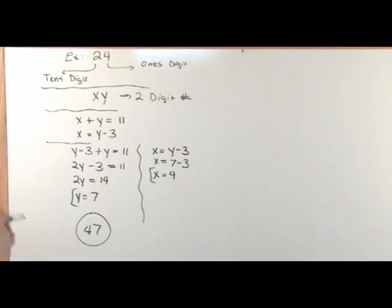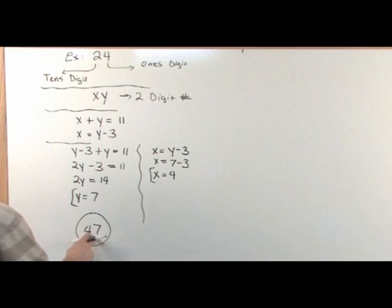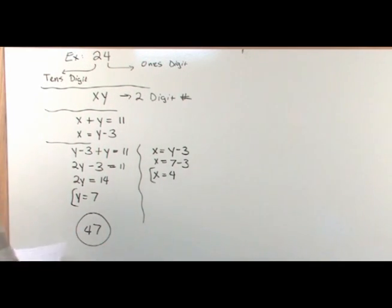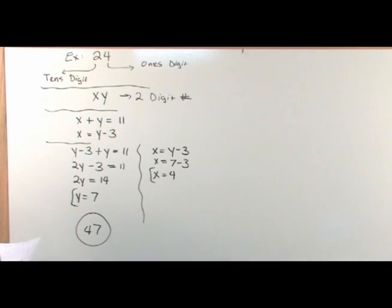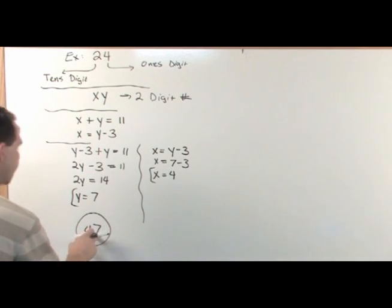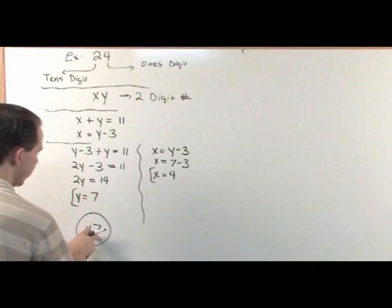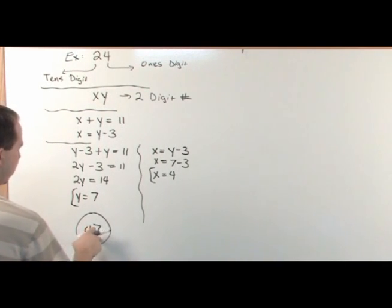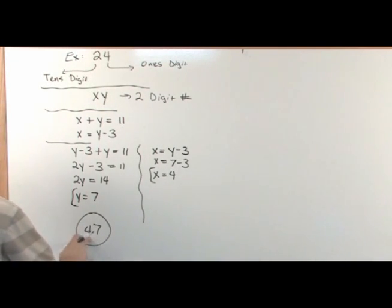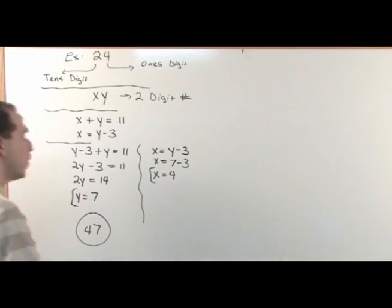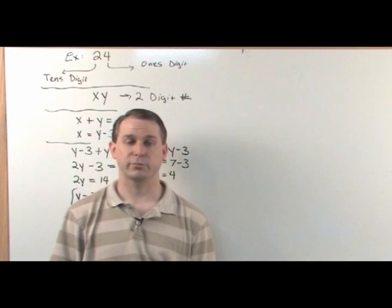Let's check if this is right. The sum of the digits must equal 11: four plus seven gives 11 — check. The tens digit must be three less than the ones digit: seven minus three gives four, so the tens digit is indeed three less than the ones digit. This number satisfies both constraints, so 47 is the answer.